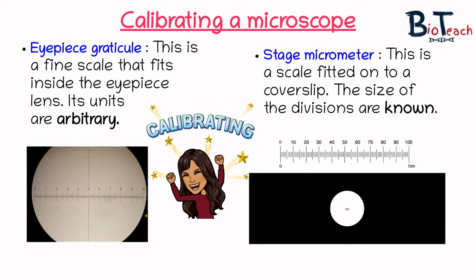A graticule is used in combination with a stage micrometer to work out the size of the object being viewed. The stage micrometer is a slide with a scale that's exactly one millimeter long and is also divided into 100 divisions, which means each division is 0.01 millimeters. This is placed on the stage of the microscope. The stage micrometer allows the graticule to be calibrated so that a precise scale can be calculated at each magnification of the microscope.